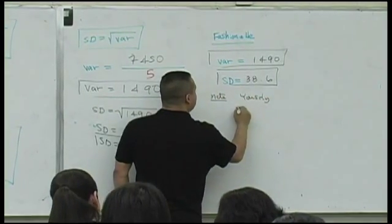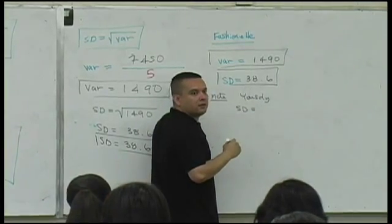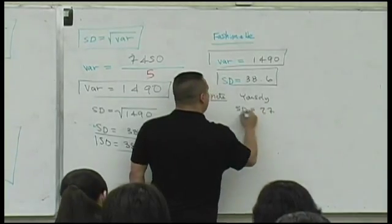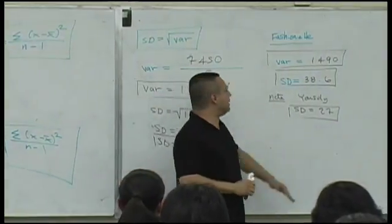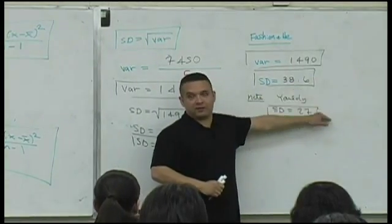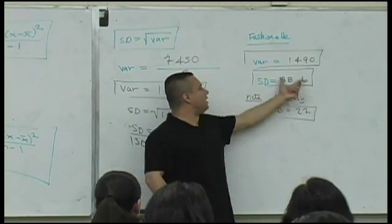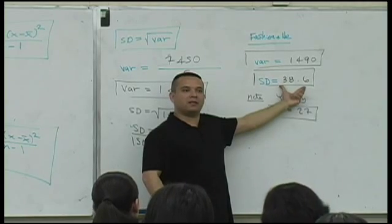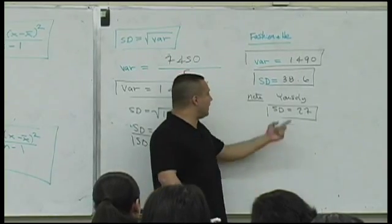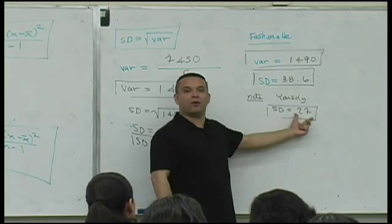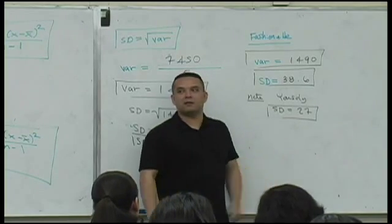So that Fashionette's standard deviation is 38.6. Let's recall and note that Yowzdi had a standard deviation of what's her standard deviation? What is it? 27. Let's go back and think. What does this mean, right? What you're saying is this: they both have the same mean, they both have the same center, but what you're saying is that on average Fashionette is 38.6 points away from her center on average, well Yowzdi is 27 points away from her center.